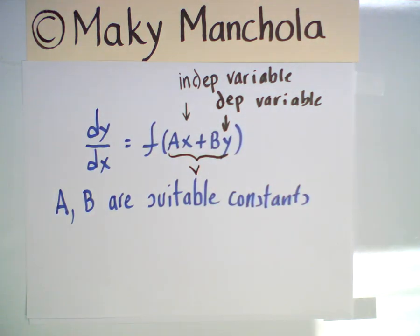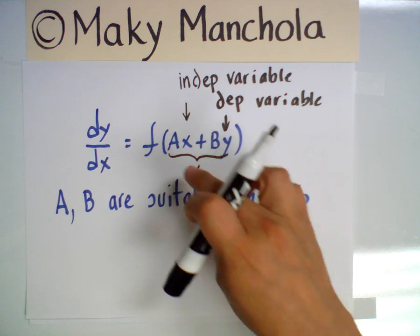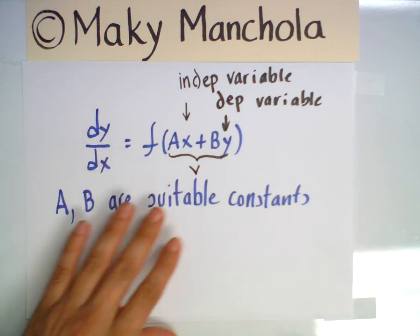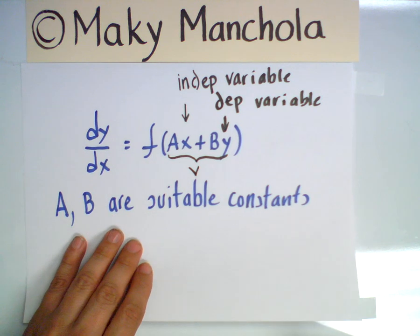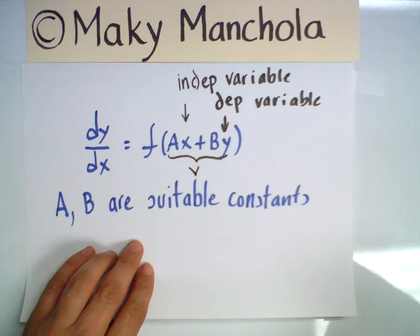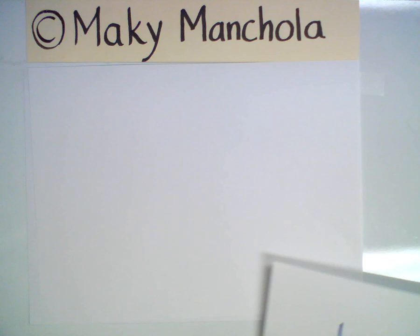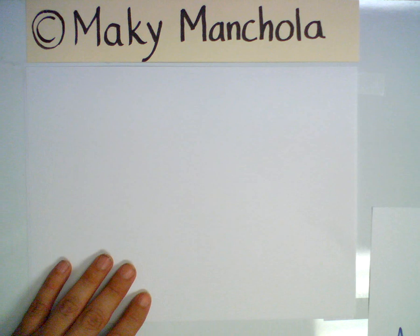This substitution leads to a separable differential equation, which we solve in terms of v and x. Once solved, we back-substitute ax plus by in place of v. Let's proceed to show how the substitution leads to a separable equation, and then exemplify with an example.